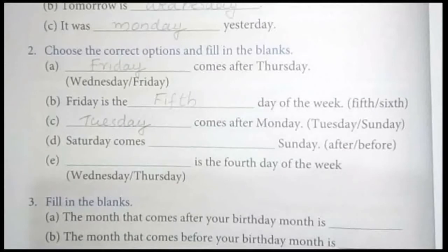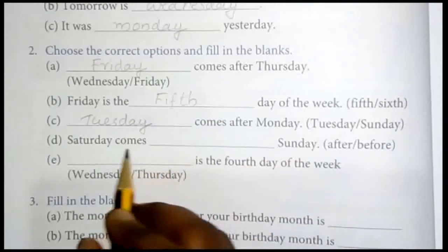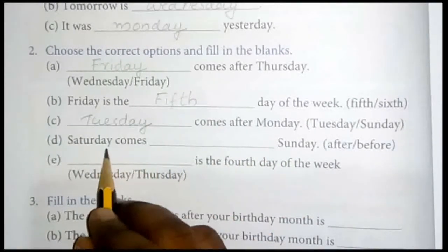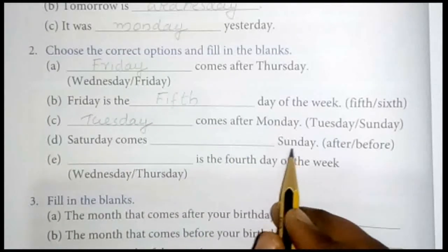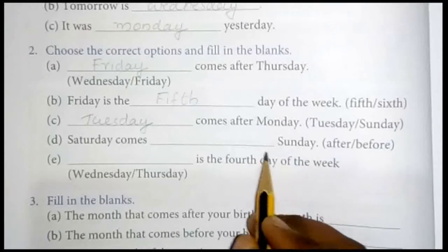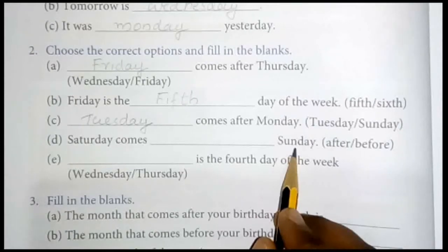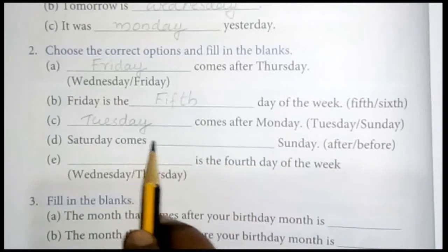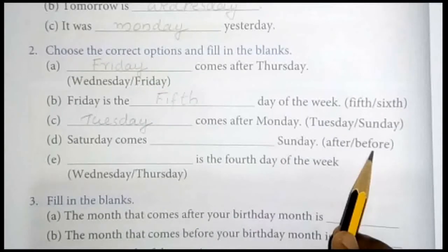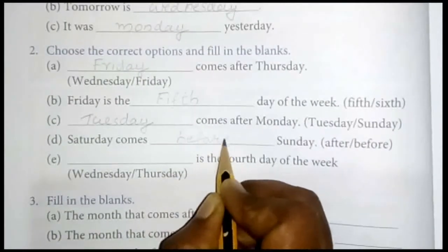Next: here comes dash — Sunday. Saturday, Sunday is after. Sunday comes before. Write here: before.